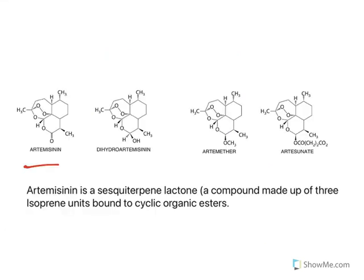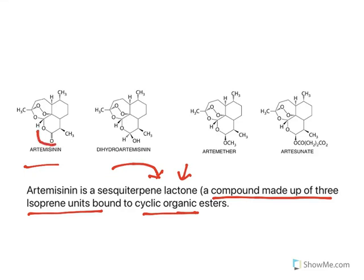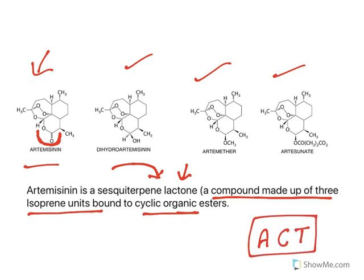Artemisinins are sesquiterpene lactones — a sesquiterpene is a compound made up of three isoprene units bound to a cyclic organic ester (lactone). All artemisinin derivatives have an endoperoxide ring. Artemisinins are very powerful drugs used in artemisinin combination therapy to treat all malaria infections.